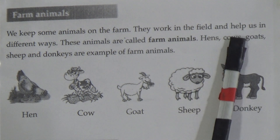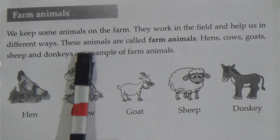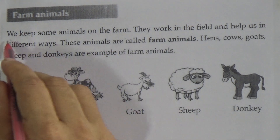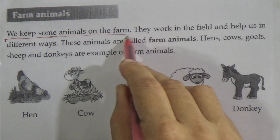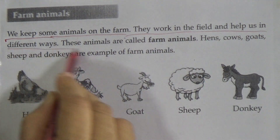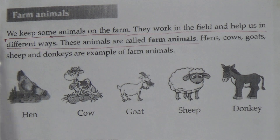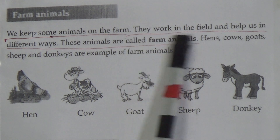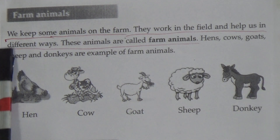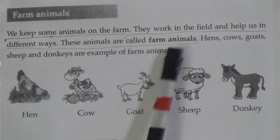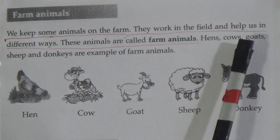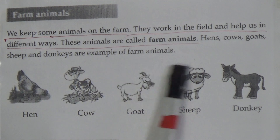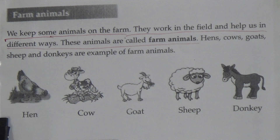Now go to the next page — farm animals. We keep some animals on the farm. They work in the field and help us in different ways. These animals are called farm animals. My dear students, now underline this line: we keep some animals on the farm; they work in the field and help us in different ways; these animals are called farm animals.